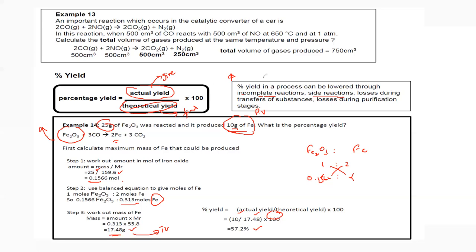There is also loss during purification stages. Sometimes we purify a reactant or product, and during purification some of the reaction mixture may be lost, resulting in a lower yield. These are the possible reasons why the percentage yield is less than 100%.